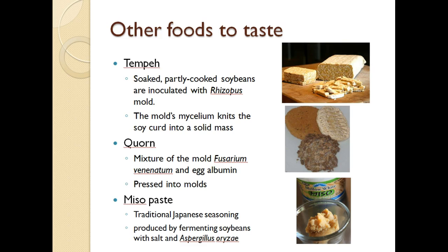Another product is Quorn, a mixture of the mold Fusarium venenatum and egg albumin, or egg whites. The mold is allowed to multiply, added to egg white, and pressed into molds — available as patties, breaded like chicken nuggets, or crumbled. Sometimes it's called TVP or textured vegetable protein, but this is really fungal protein. Finally, we'll hopefully have an opportunity to taste miso paste, a traditional Japanese seasoning produced by fermenting soybeans with salt and Aspergillus oryzae. There are different types of miso paste, familiar from miso soup. Miso is full of probiotics, but once heated the probiotics are killed, so heating it in miso soup eliminates those benefits.